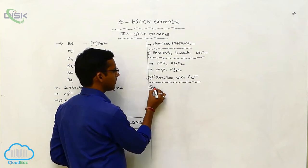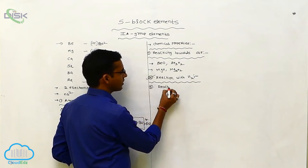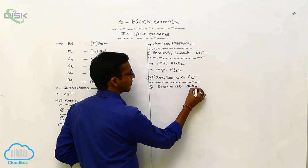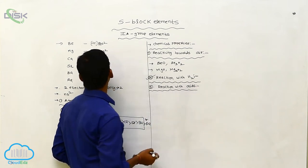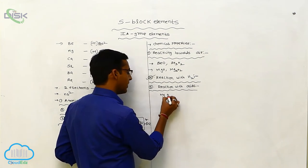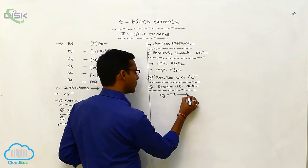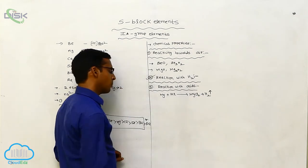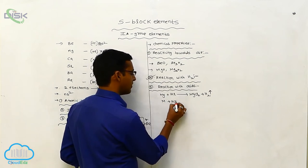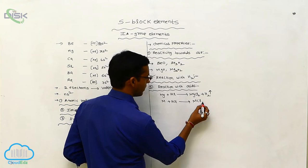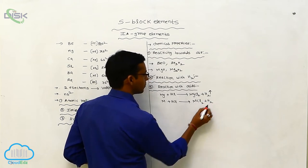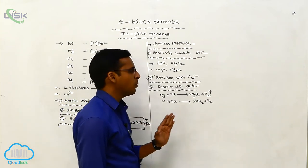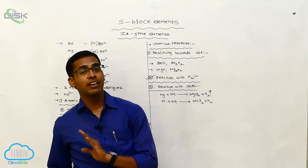Next is reaction with acids. When a Group 2 metal such as magnesium reacts with an acid like HCl, it forms a metallic chloride and liberates hydrogen gas — for example, magnesium chloride plus H₂. Whenever the secondary group elements react with acids, they liberate hydrogen gas.